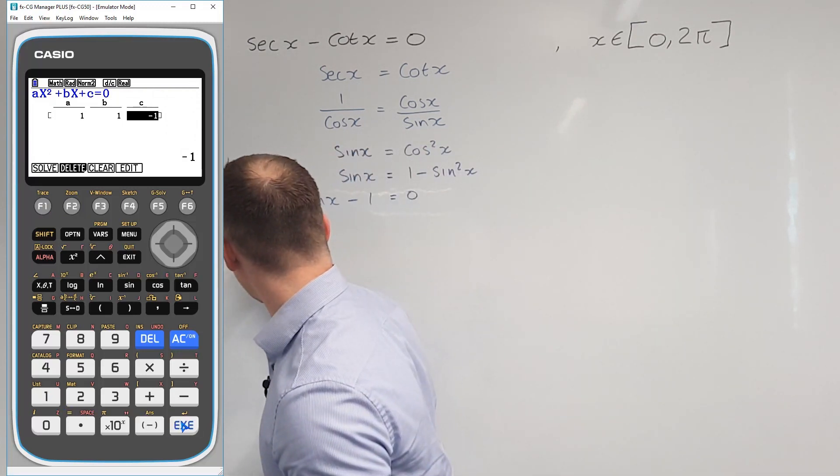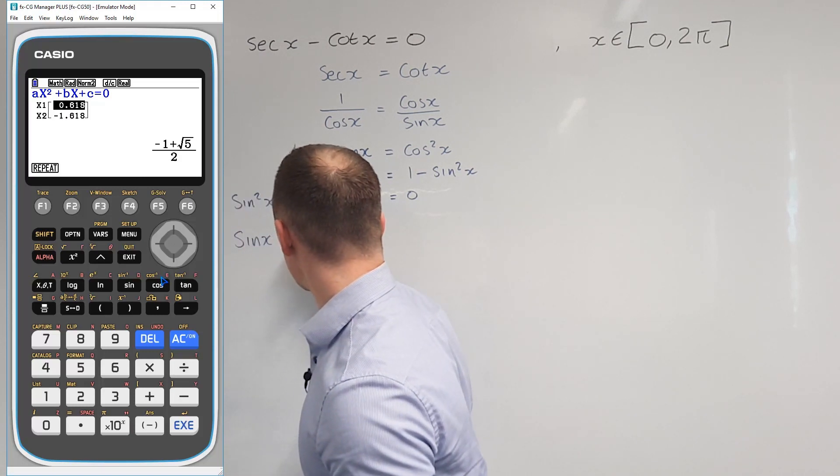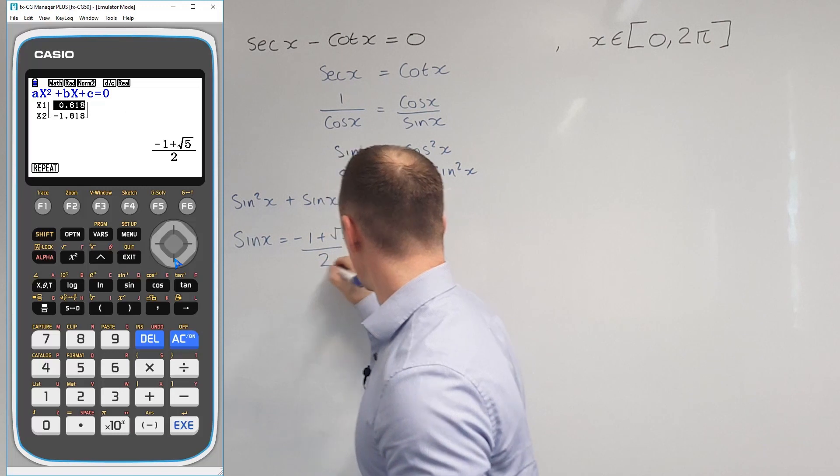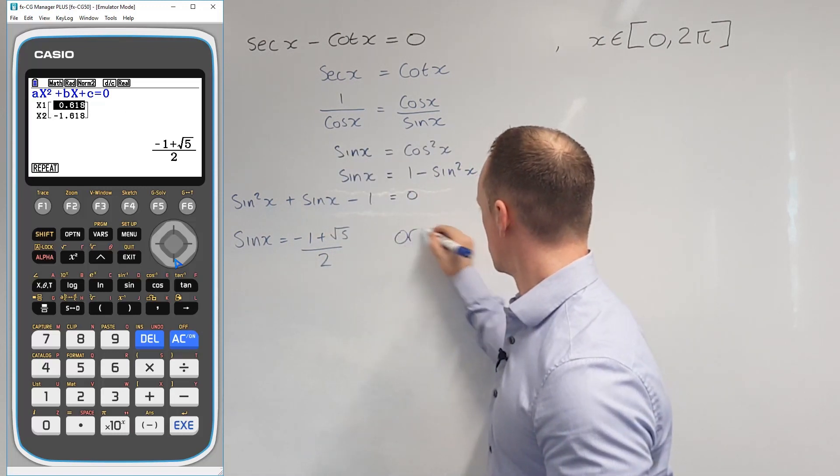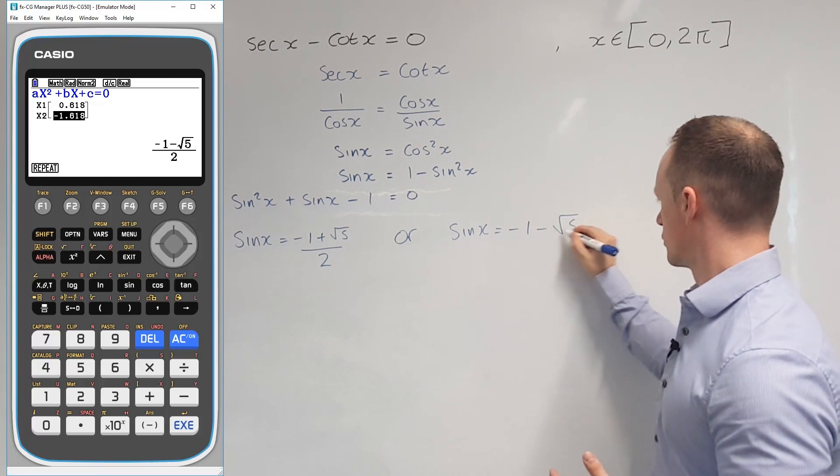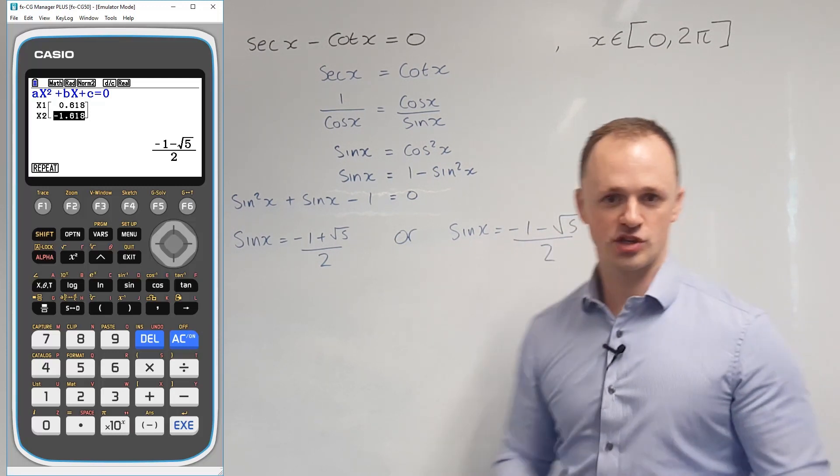So if we do that, we're going to get sine x equals minus 1 plus root 5 over 2, or sine x equals minus 1 minus root 5 over 2.